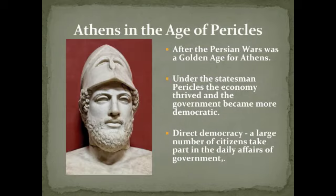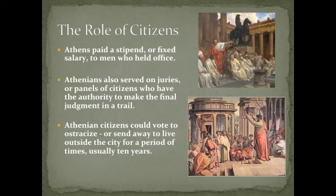The time after the Persian Wars was a golden age for Athens, especially in the area of government. Under the statesman Pericles, the economy thrived and the government became more and more democratic. Periclean Athens was a direct democracy, which means that a large number of citizens take part in the daily affairs of the government, not just a select group of elected officials like in most democratic societies today. At least 6,000 members had to be present to decide important issues. Athens actually paid a stipend, or a fixed salary, to men who held office, which allowed the poor to serve in government. The Athenians also served on juries — panels of citizens who have the authority to make the final judgments in a trial. An Athenian jury might include hundreds or even thousands of men. Any male citizen who was over 30 was able to serve on the jury for a year, and they were also paid a stipend.